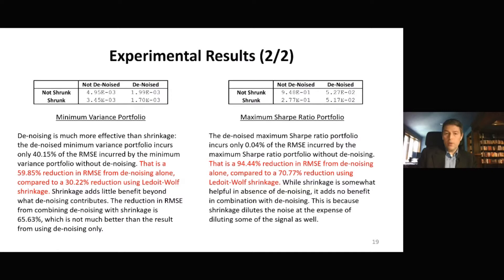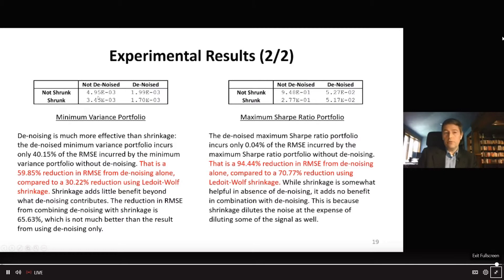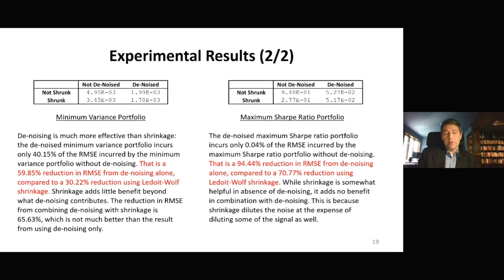What we obtained is a very high error. The root mean square error is very high. Why? Because the covariance matrix is very unstable. The inverse covariance matrix has exploded because the original covariance matrix is numerically ill-conditioned.